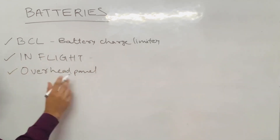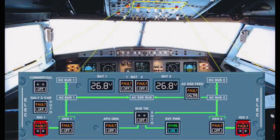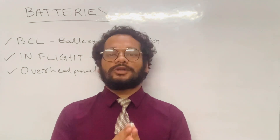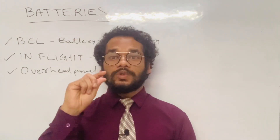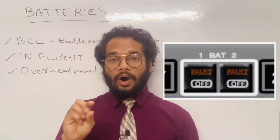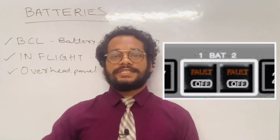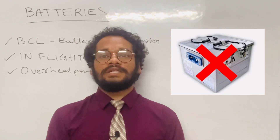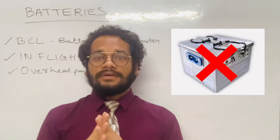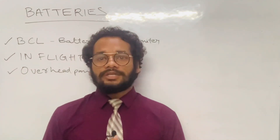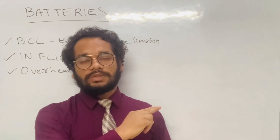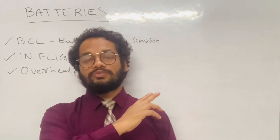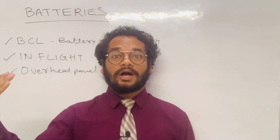On the normal electrical power panel, the battery push button can display two legends: OFF in white color, and FAULT in amber color. The OFF legend means the batteries are in the off state — the BCL is not in operation. To set the batteries to ON, press both battery push buttons; the OFF legend disappears and the push buttons go to a light-out condition, following dark cockpit philosophy.